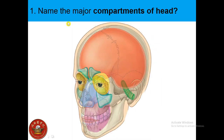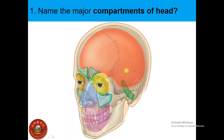The major compartments of the head are: the cranial cavity, two ears, two orbits, two nasal cavities, and an oral cavity. The largest compartment is the cranial cavity, which contains the brain and associated membranes — what we call the meninges.